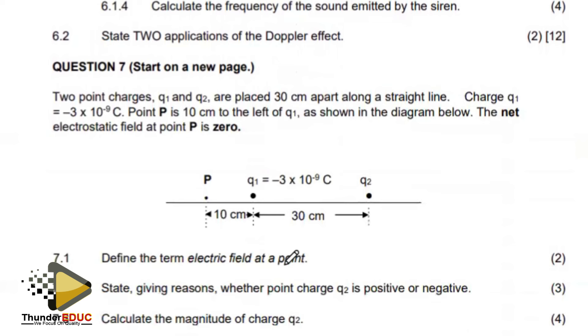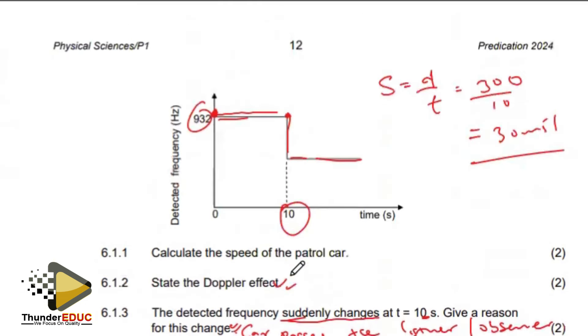Next, they want us to take the speed of air to be 340 meters per second and then calculate the frequency of the sound emitted by the siren. So what we saw was that the frequency of the listener was 932.